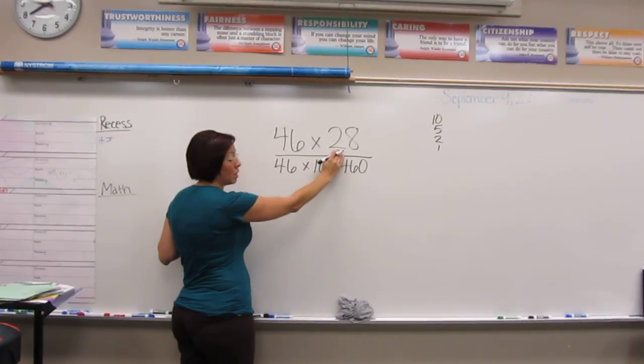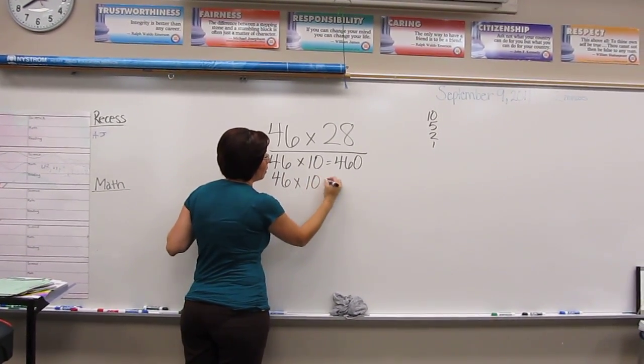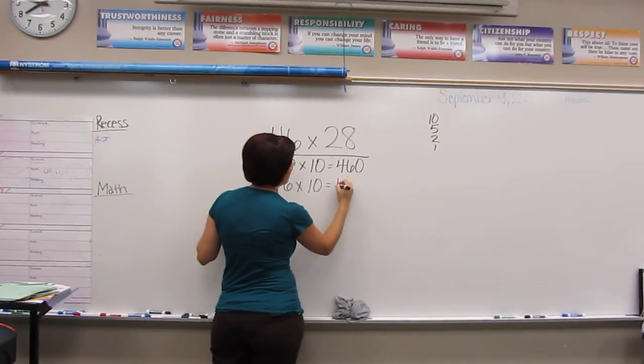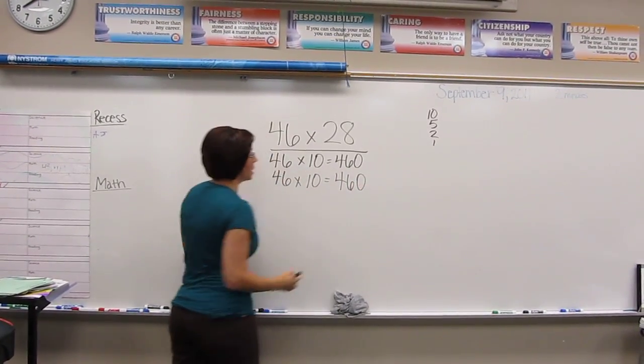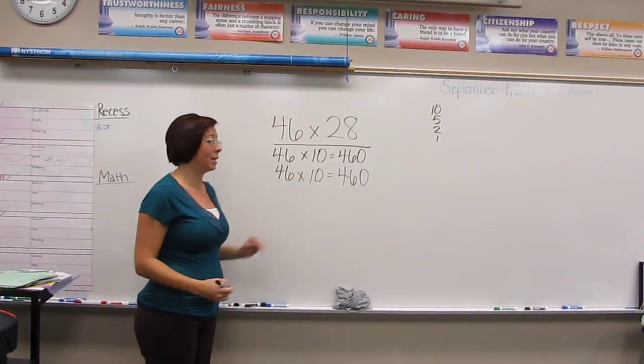Then I know that I've used up only 10 of this, meaning I have 18 left. So I take care of another 10, which is also 460. And if you look now, I've got essentially 46 times 20 once I add these two together.